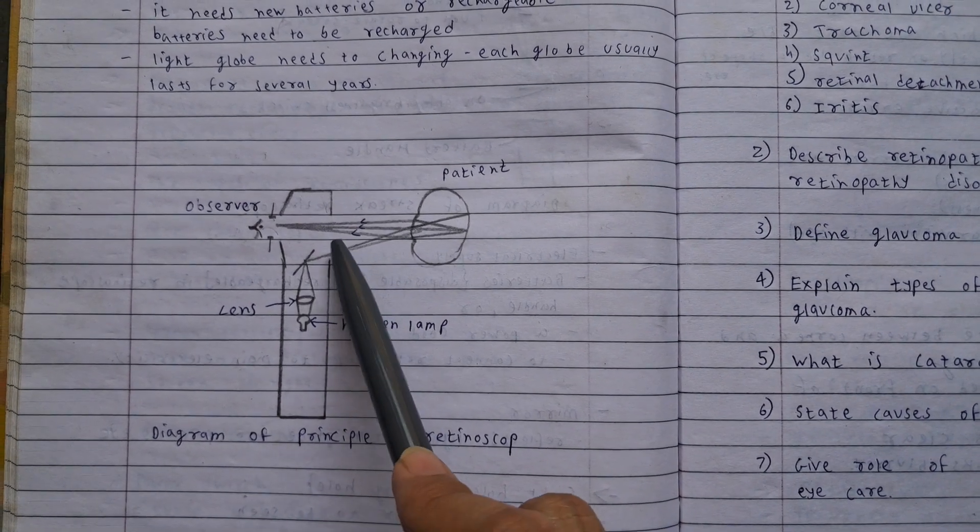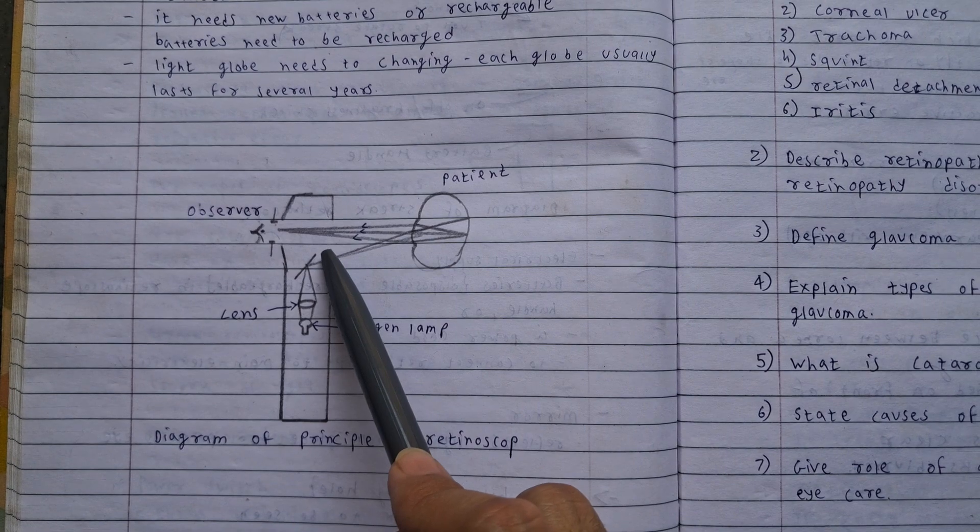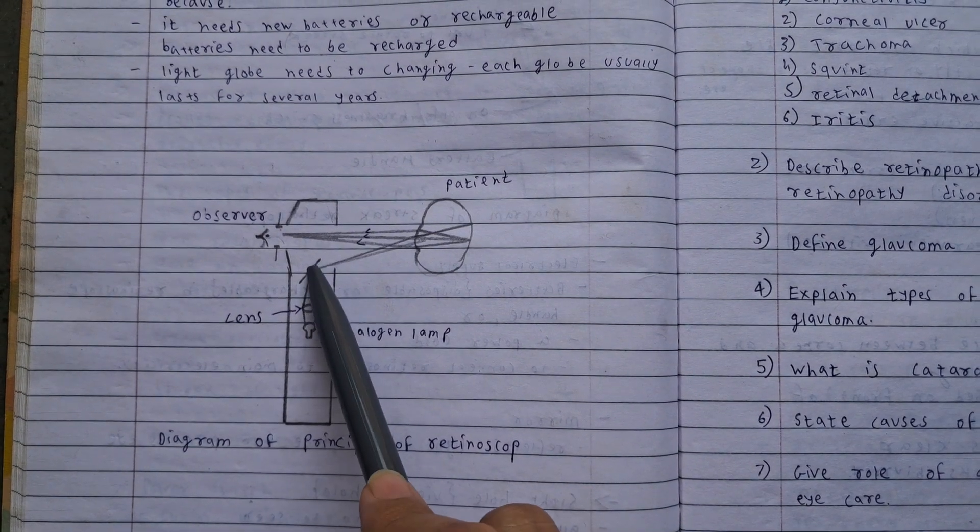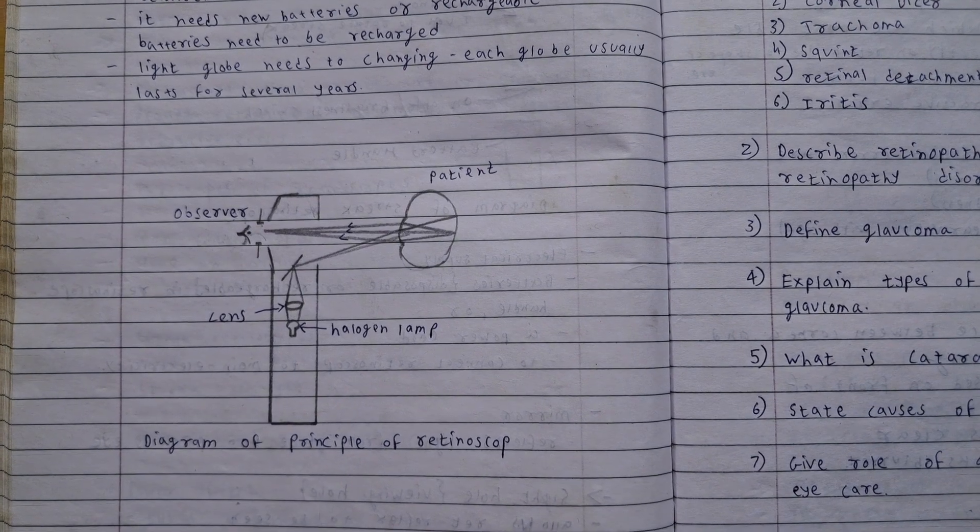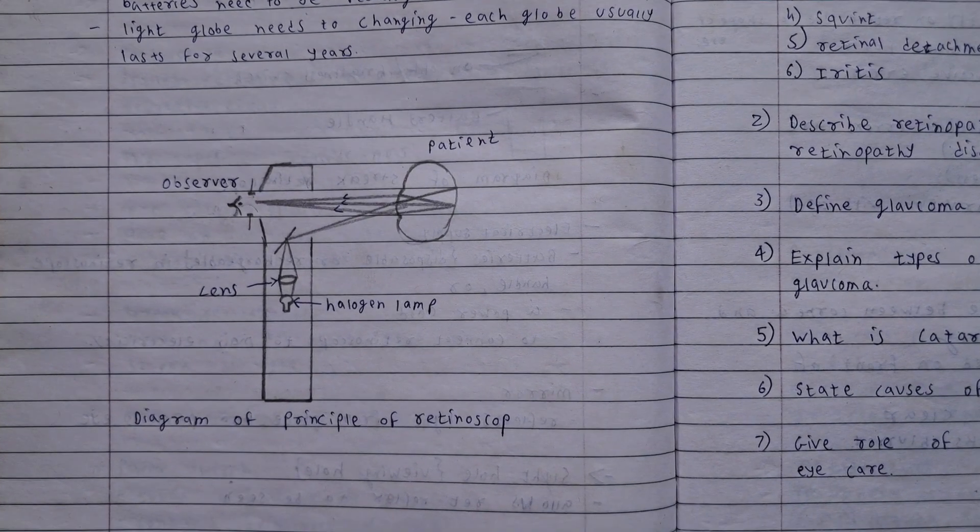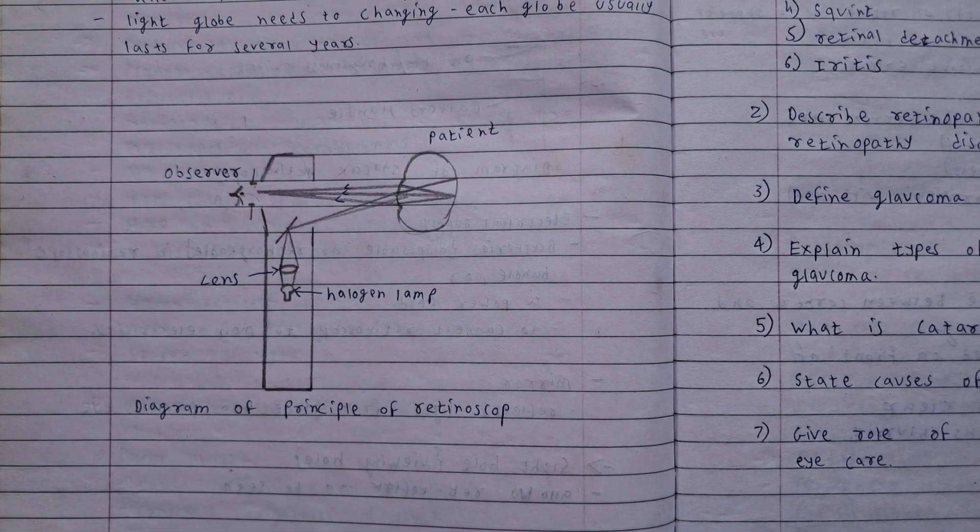And here light is there, ERL lens that diverges this light and goes to patient's eye, and doctor is able to see. Diagram of principle of retinoscope is this.